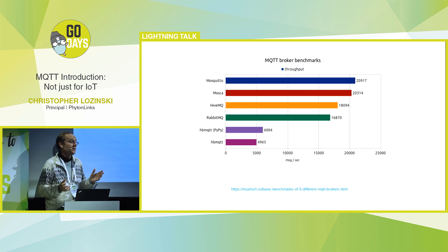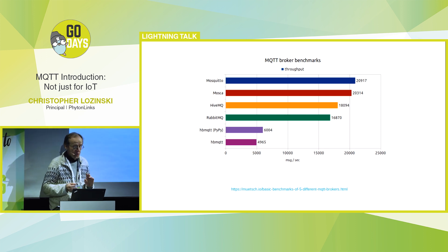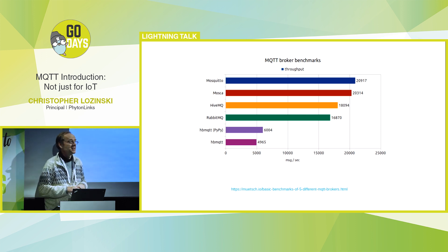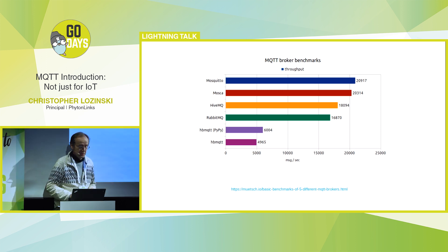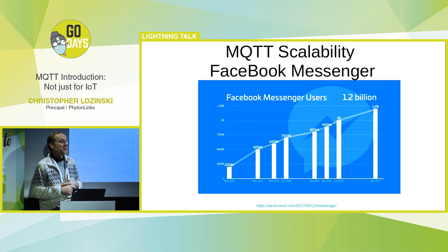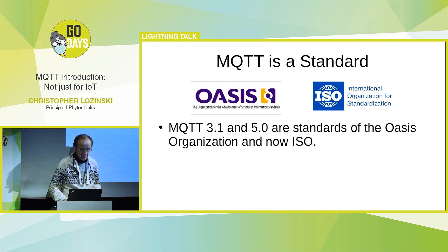So how fast are these? Typically you can send about 100,000 messages per second to the broker. The different brokers have different performance, and if you really have to scale, there are a couple that will scale across multiple servers. The biggest example is Facebook — the whole Facebook Messenger is based on MQTT, so it's going to scale as high as you want.